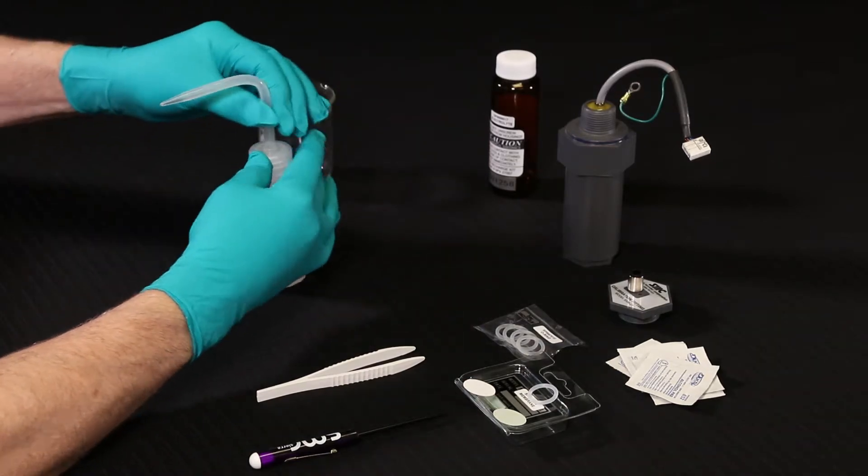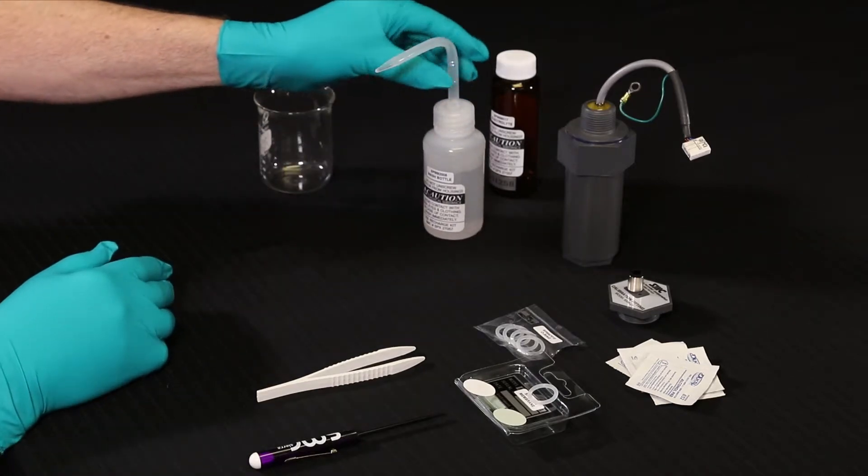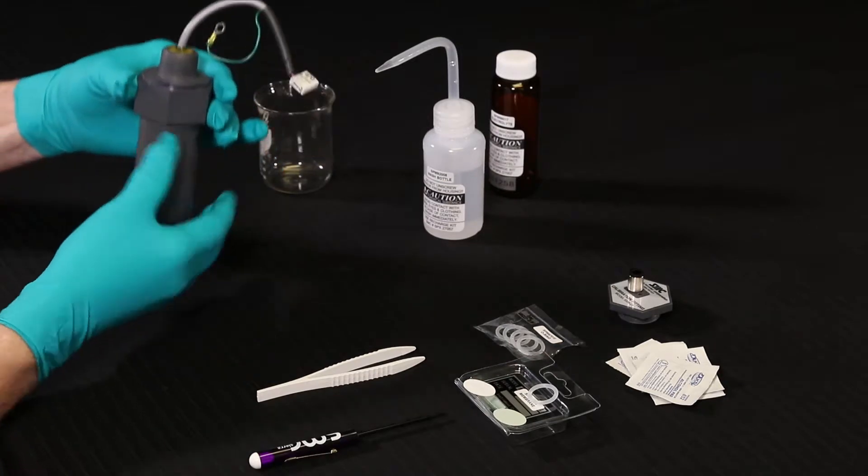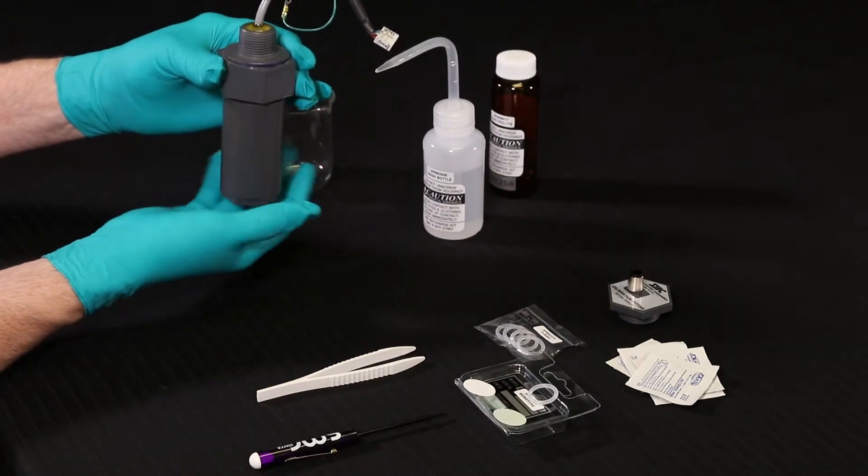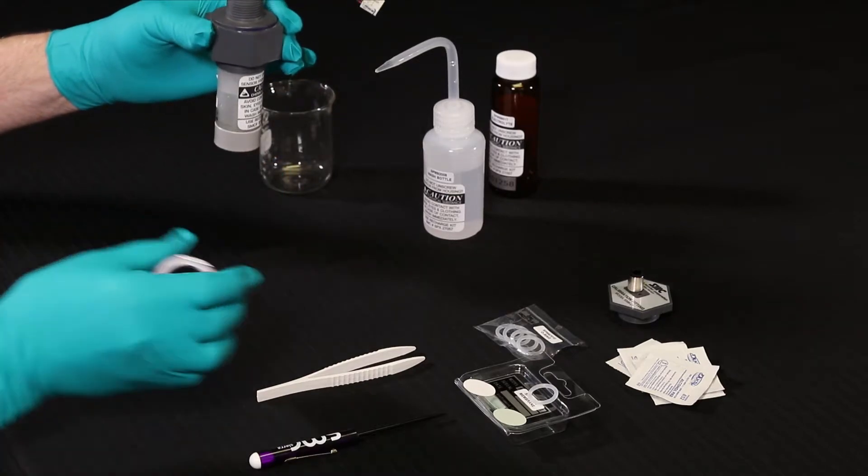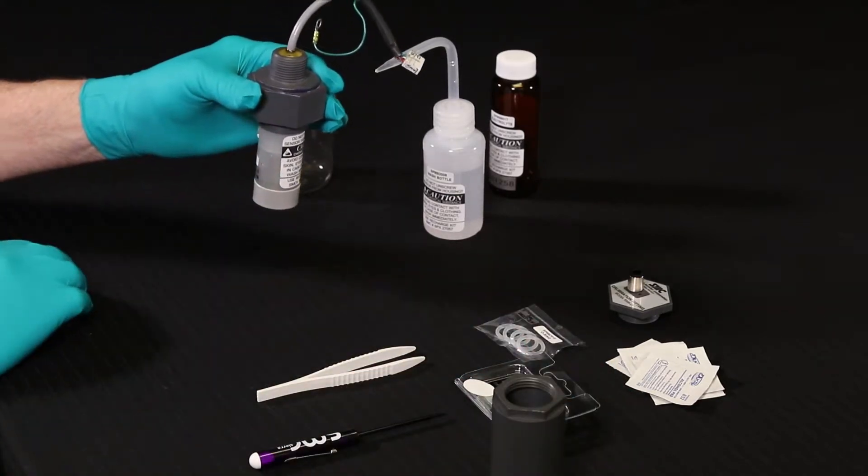Next, unplug the sensor assembly from the transmitter and remove from the enclosure. Next, unscrew to remove the outside protective gray barrel from the sensor assembly. Do not attempt to unscrew or disconnect the glued sensor cell from the upper sensor housing.